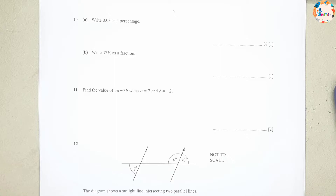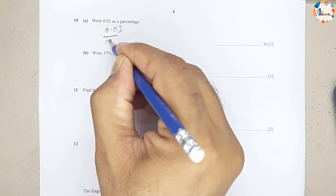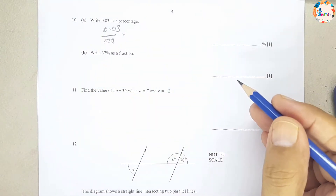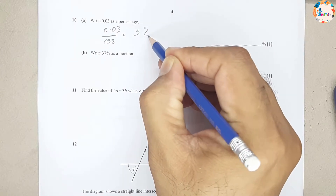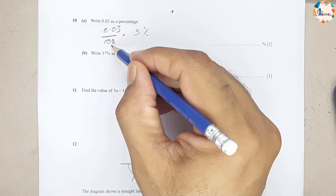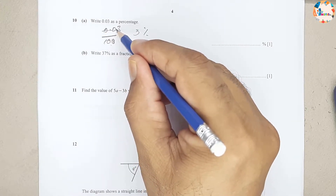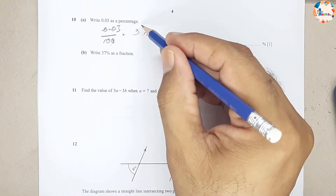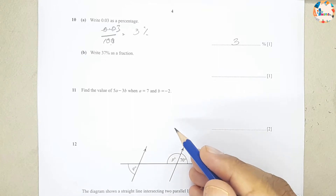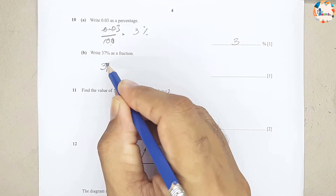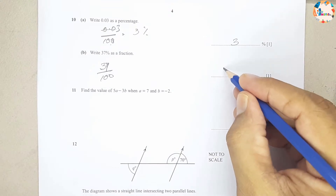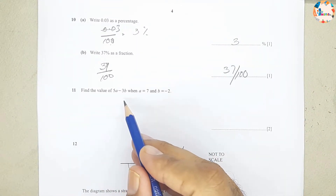Question number 10: write 0.03 as a percentage. We write 0.03 as 3/100, which equals 3%. Then write 37% as a fraction: 37% equals 37/100.